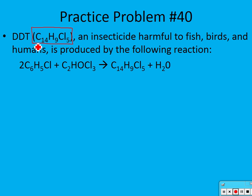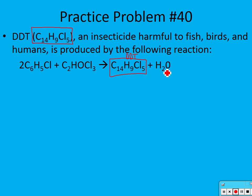DDT was a chemical spray used to kill insects. It worked really well — in fact it worked too well. It not only killed the insects, but was harmful to fish, birds, and humans. So the government no longer allows the use of DDT as an insecticide. Anyway, they would react this reactant with this other reactant to form DDT and water. That's the reaction we're going to be working with in this problem.